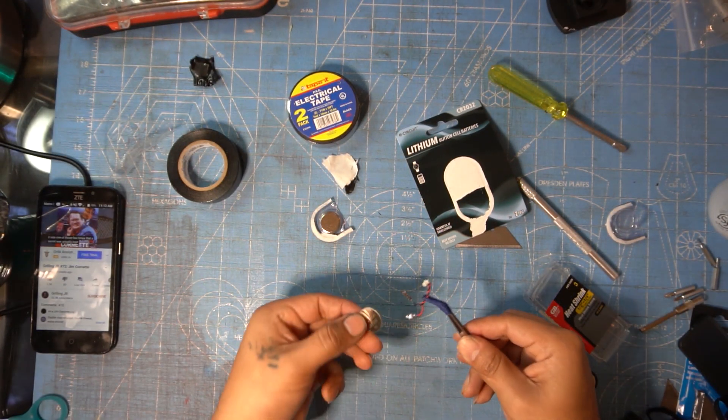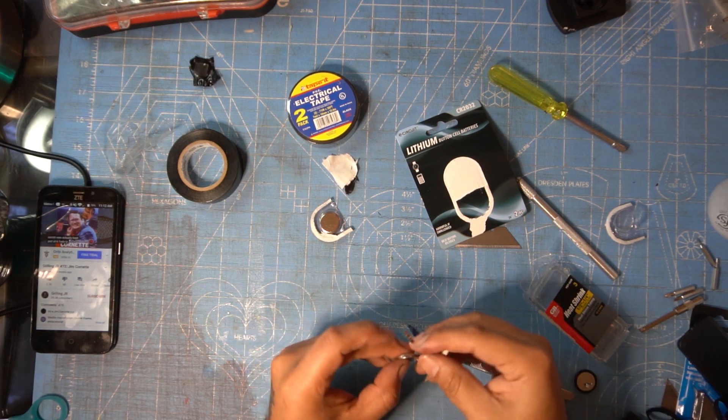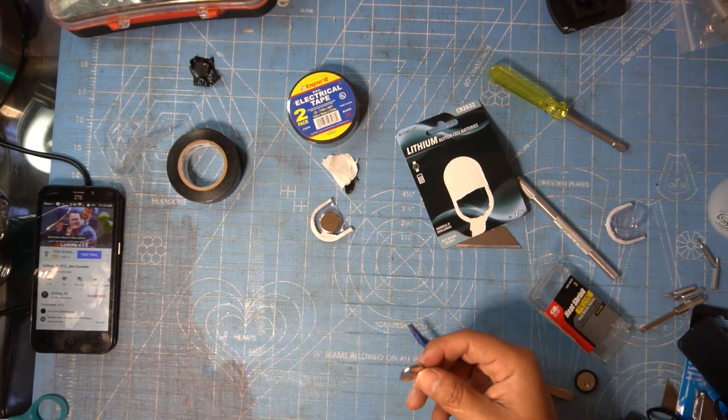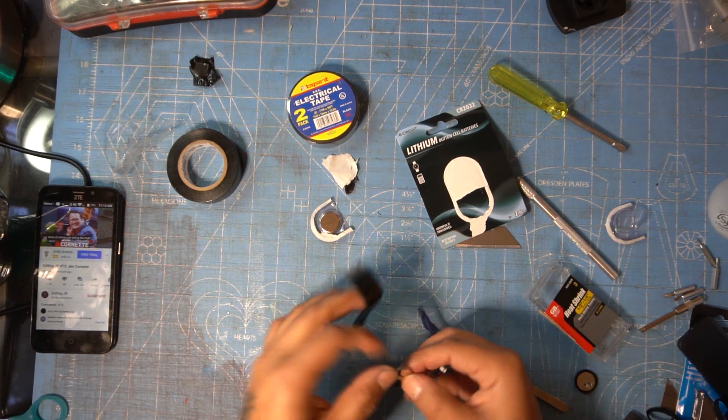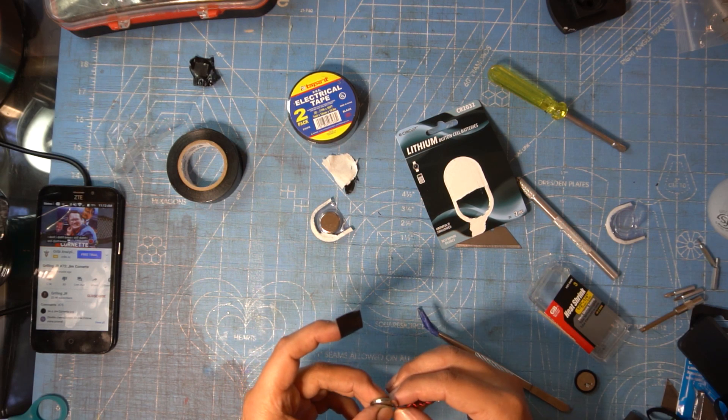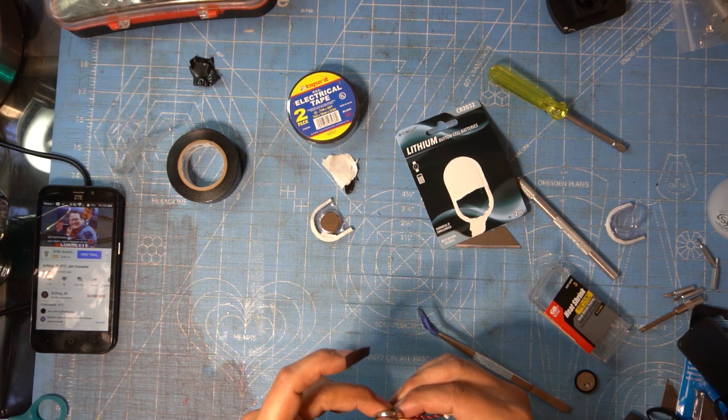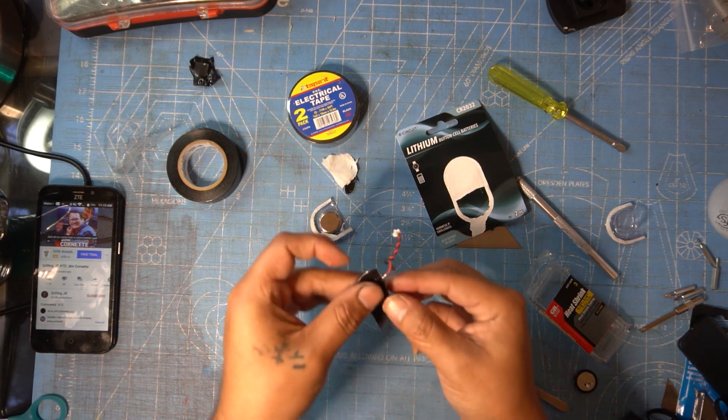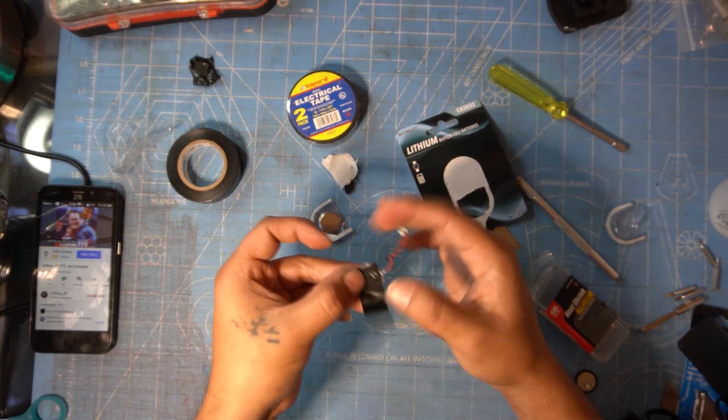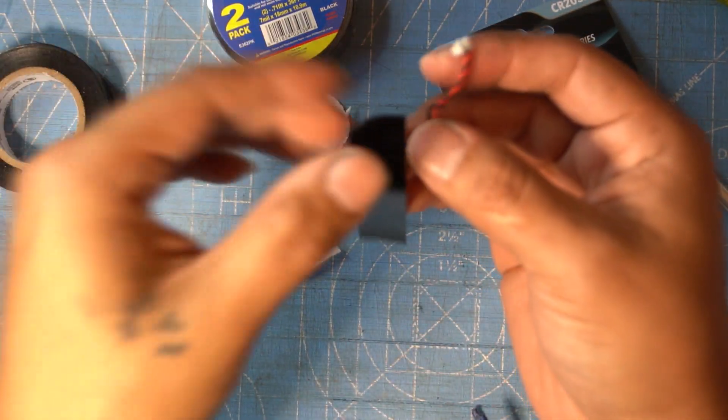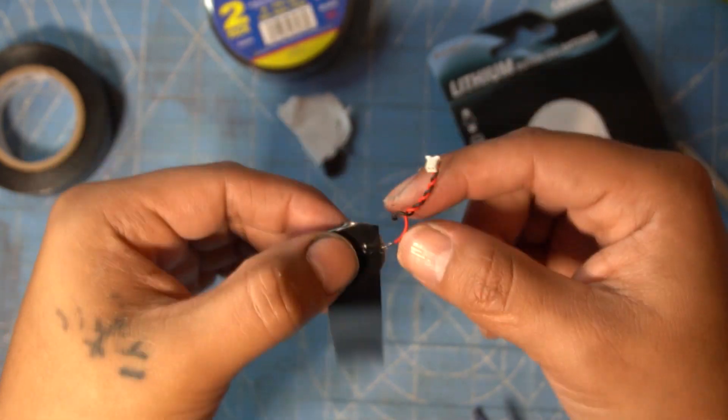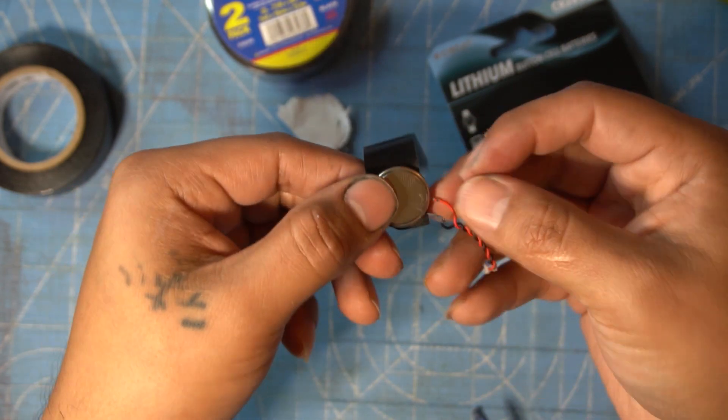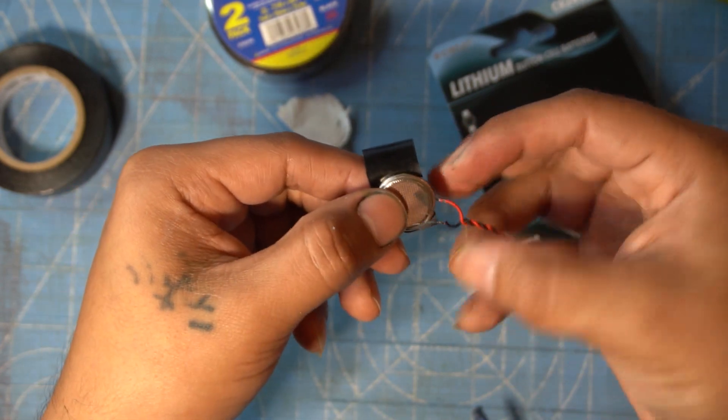So red is positive, black is negative. So we're gonna take our piece of electrical tape here, we're gonna put that on and we're gonna start with our positive. I can get in there a little bit, it's kind of hard to see where I'm at, but just throw that positive on there and on the opposite side just throw that negative.